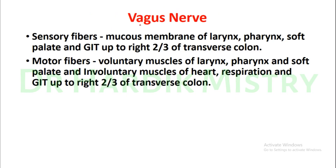Next is the Vagus nerve — the 10th cranial nerve — which has sensory and motor fibres. Sensory fibres come from the mucous membranes of the larynx, pharynx, soft palate, and gastrointestinal tract up to the right two-thirds of the transverse colon. Motor fibres supply the voluntary muscles of the larynx, pharynx, and soft palate, and the involuntary muscles of the heart, respiration, and gastrointestinal tract up to the right two-thirds of the transverse colon.